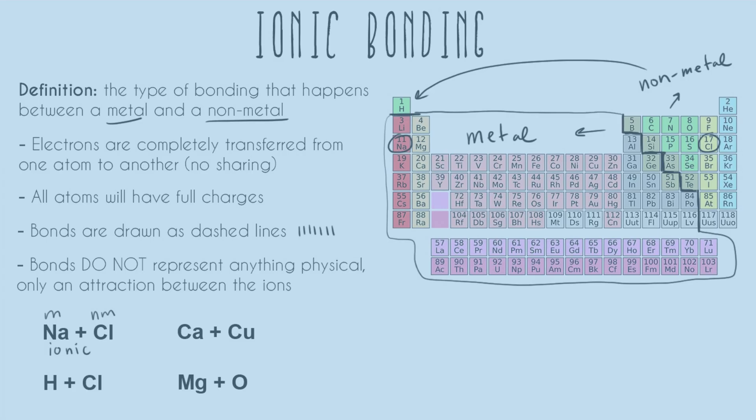So going along, below it, we have H. So that's our big exception. H is a non-metal, even though it's on the left-hand side. And then we have chlorine back over on the right-hand side, also a non-metal. So this is not going to be ionic because we have two non-metals. That is actually covalent.